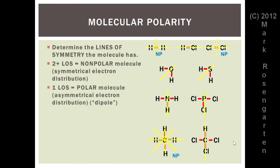One line of symmetry means the molecule is polar — the electrons are not evenly distributed, they're asymmetrically distributed, forming what's called a dipole, where the electrons are pulled towards whichever side has the greater electronegativity. Any molecule with only one line of symmetry is considered a polar molecule.